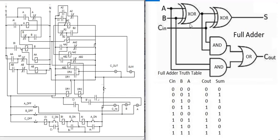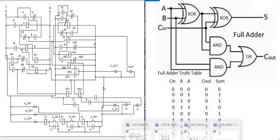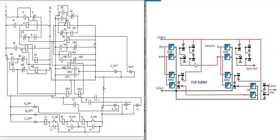Two half adders, an XOR gate, and an AND gate make a half adder. This is the first half adder, this is the second half adder, and an OR gate. This makes the full adder. Let us now see the simulation of this full adder circuit.